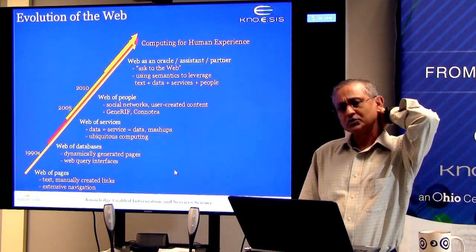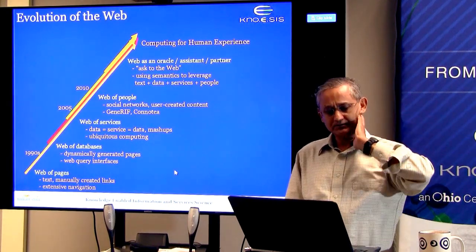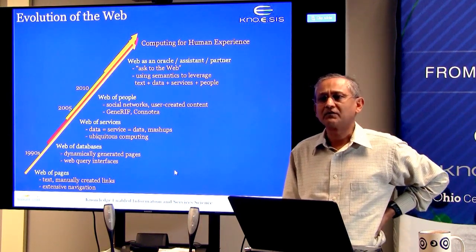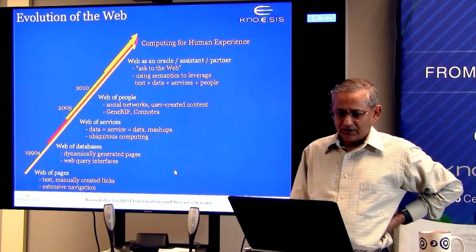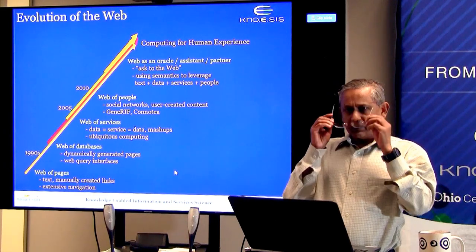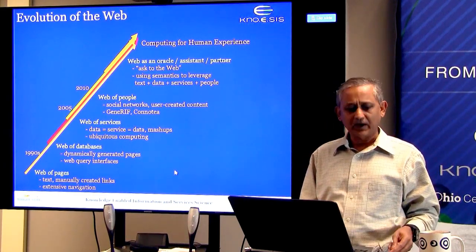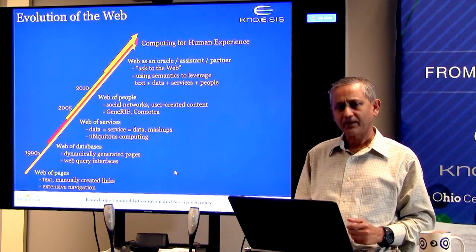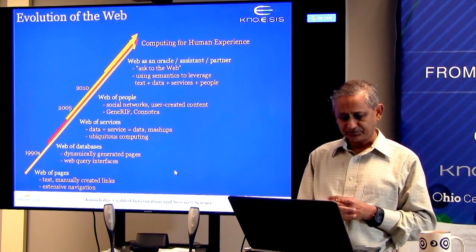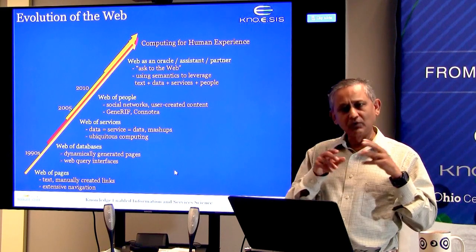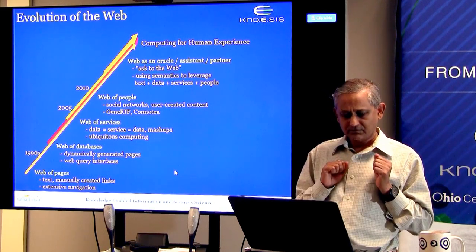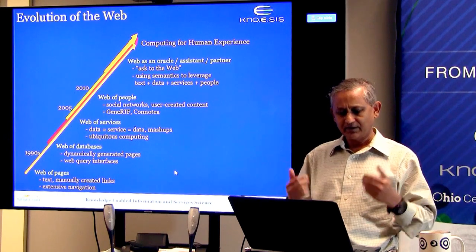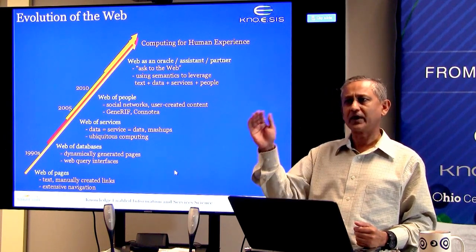Let's look at the evolution of the web. There are pieces of this I have talked to you about in my first or second class. When we started the web, what we had was a web of pages or web of documents. The documents were manually created and we would insert the links — the links were manually embedded and we would do navigation.